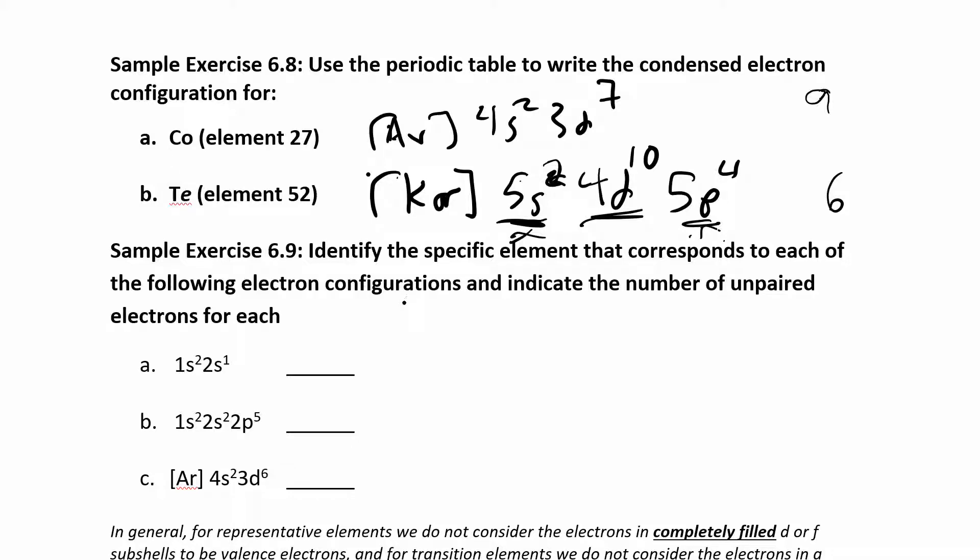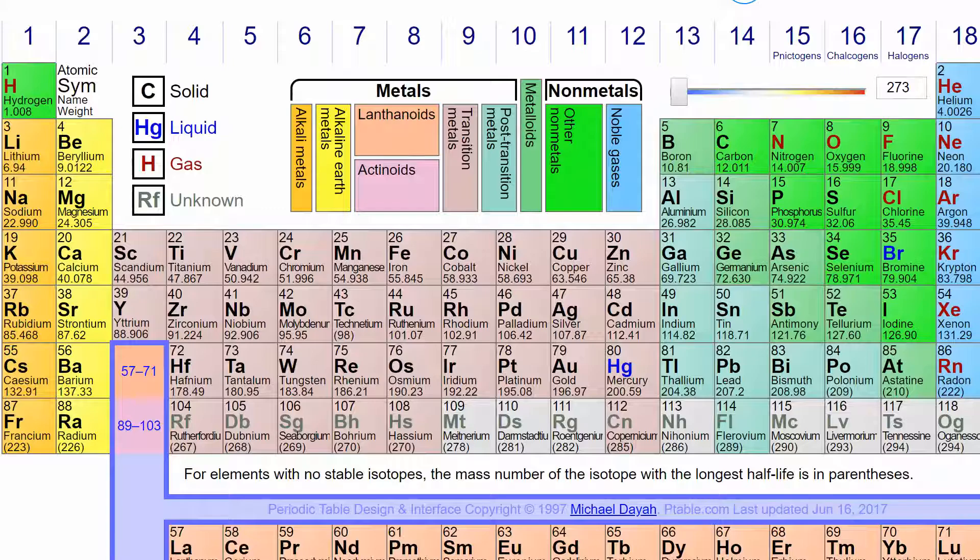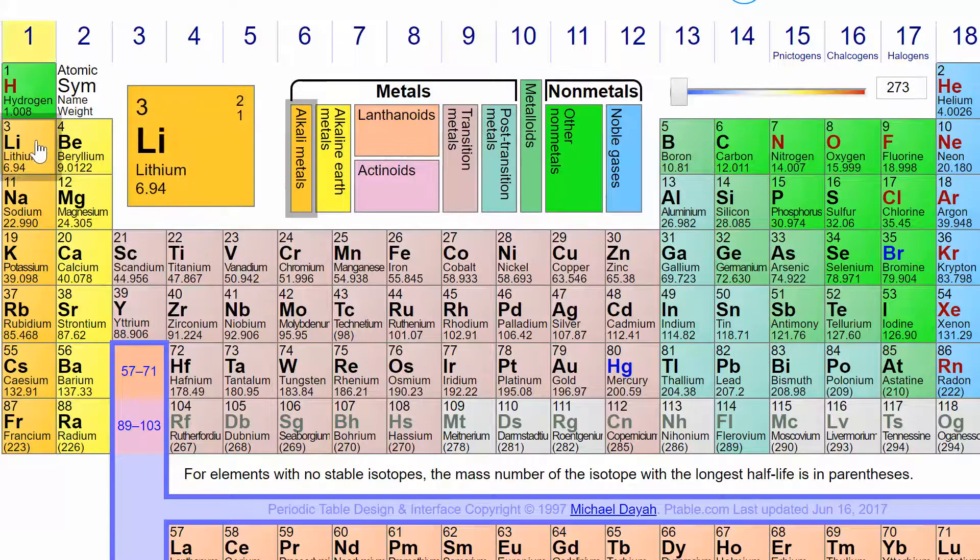And then we should be able to do this the other way, too. Identify the specific element based on its electron configuration, and then indicate the number of unpaired electrons for each. So I was just counting up the number of valence electrons in those. We can look at unpaired electrons as well. We're looking at the orbital diagrams. So 1s2 2s1, I have three electrons. So if you go back to the periodic table, I have three total electrons. That's lithium.